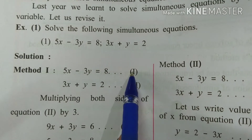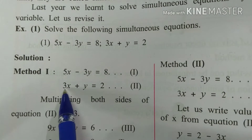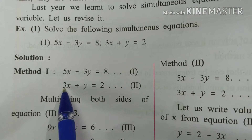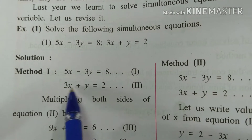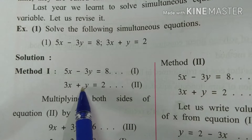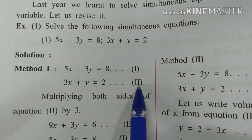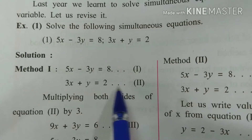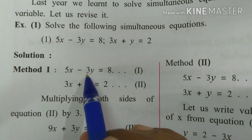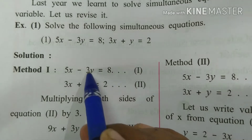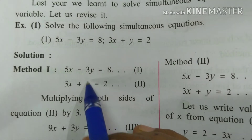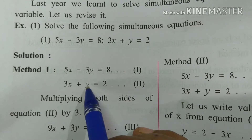We can solve these equations. The first equation is 5x minus 3y is equal to 8, and the second equation is 3x plus y is equal to 2. These two equations share the same variables.